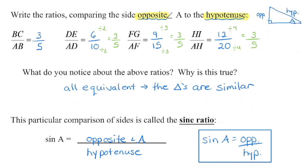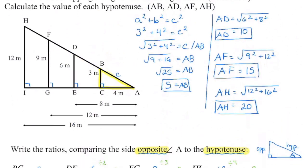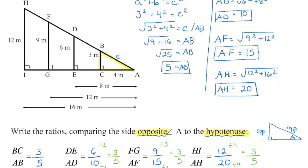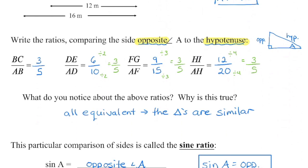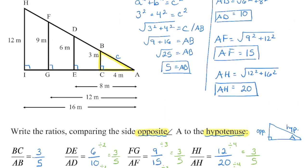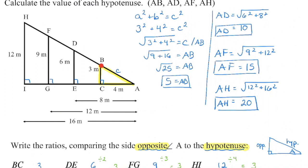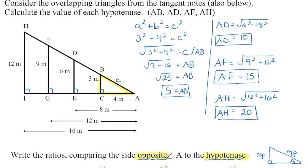The sides we're going to begin comparing are the opposite side to angle A and the hypotenuse. I took the triangles we had previously — it doesn't matter how big or small the triangle is. This is my hypotenuse, this is my opposite. Unlike yesterday, we have to actually calculate the value of the hypotenuse. We can do that because it's a right triangle by using Pythagoras' theorem: a² + b² = c².